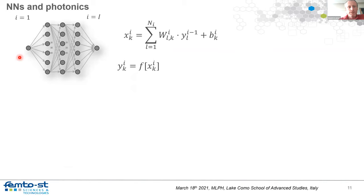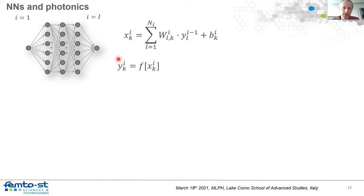For a simple deep neural network, you have the canonical equation: a neuron's internal state for layer i, neuron k, is determined by a connectivity matrix to neurons in the previous layer, their output states, plus a bias. The output of any neuron is a non-linear mapping of its internal state.